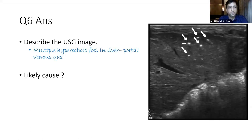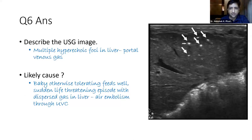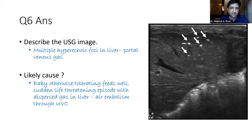This shows multiple hyperechoic foci in the liver, which is portal venous gas. Most likely, since the baby was otherwise tolerating feeds and this was a sudden life-threatening episode with air dispersed in the liver, it is probably air embolism through the UVC. Fortunately, the baby recovered with effective resuscitation, and the ultrasound really helped in getting the diagnosis. These kinds of ultrasound images can definitely appear in examinations.